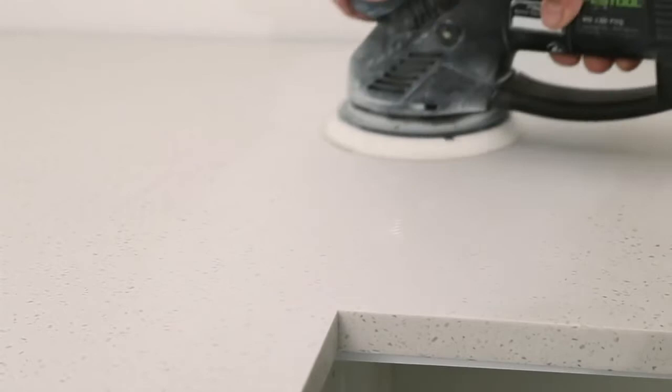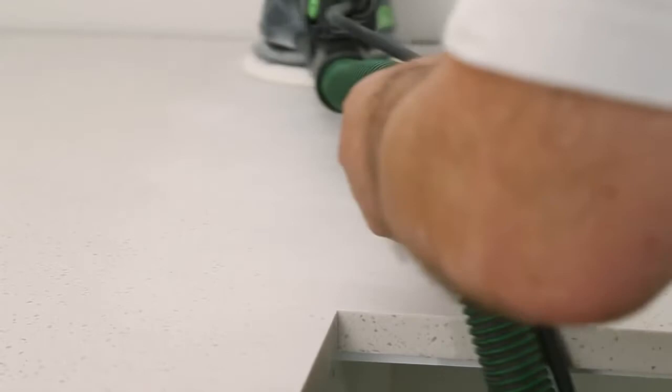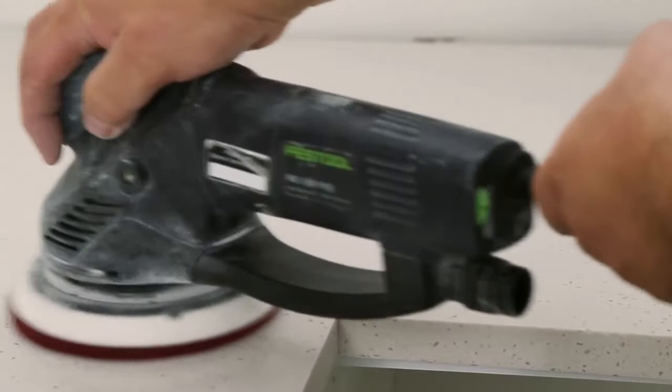The MDF blocks are simply removed by lightly tapping with a hammer. Then the remaining bead of adhesive is sanded off using a random orbital sander and the three grades of sandpaper. Each time working in a slightly wider area in horizontal and vertical sweeps, and ensuring that excess dust is removed each time the sandpaper is changed.